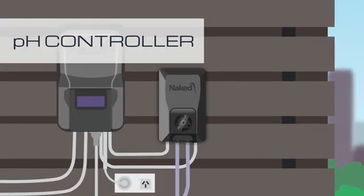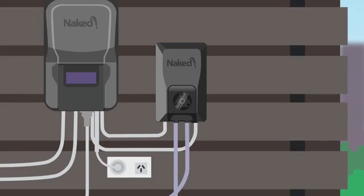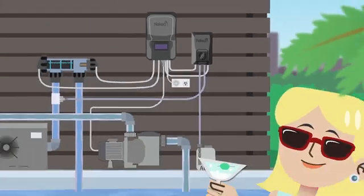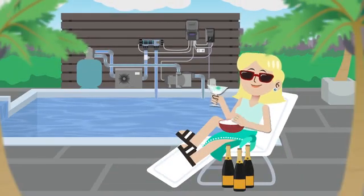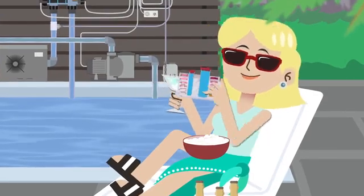A pH controller is a device that automatically doses small amounts of acid into the pool each day. Your pool might already have one installed. They're designed to make managing a pool easier but you still need to check the water balance on a regular basis.